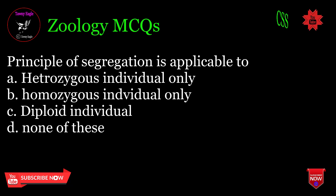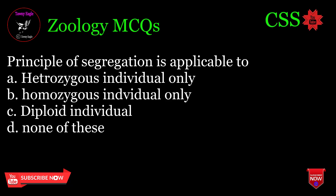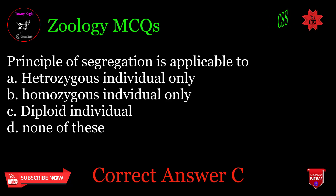Principle of segregation is applicable to: A. Heterozygous individual, B. Homozygous individual, C. Diploid individual, D. None of these. Correct answer: C.